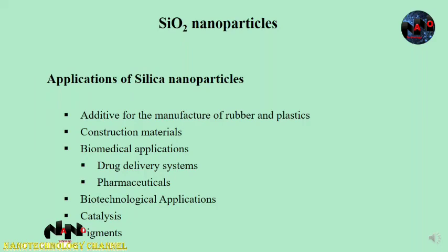Here are some examples of silicon nanoparticle applications. The chief applications include use as an additive for the manufacture of rubber and plastics. Another application is as a strengthening filler for concrete and other construction composites. In the construction sector, the capability to provide mechanical reinforcement to cement-based materials is one of the most preferred properties of silicon nanoparticles.